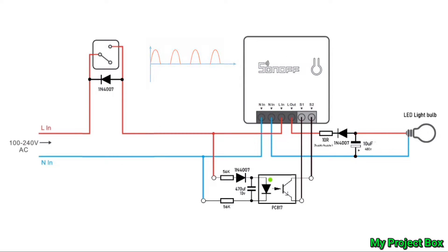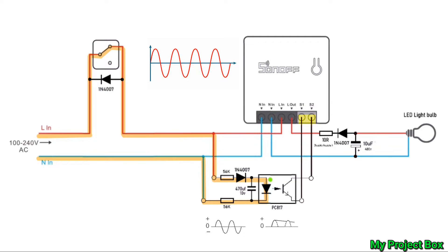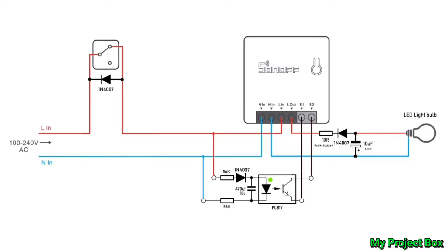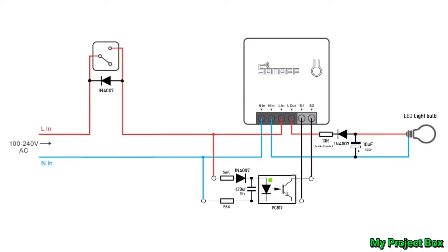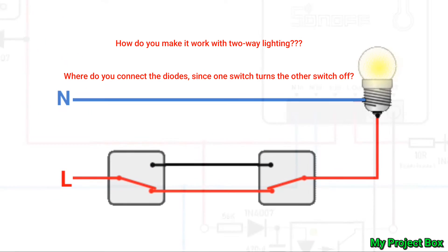And then you have a circuit that detects this transition between half-wave and full wave and that then tells the Sonoff to get a switch input locally. And it works rather well but then of course a lot of you asked me in the comments is it possible to make this work with two-way lighting?